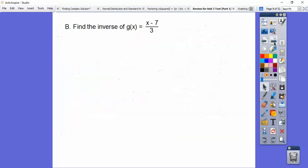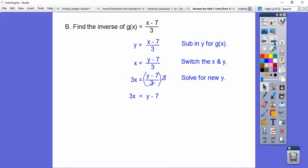Find the inverse of g(x) = (x - 7)/3. The first thing we do is we sub in y for g(x), and then we switch the x and y's, and now we solve for the new y. Here I've got to add 7, so there's the new y, and then we replace that with f inverse of x. f inverse of x equals that 3x plus 7, so there's the inverse.